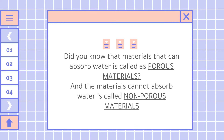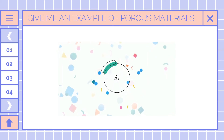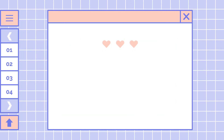Did you know that materials that can absorb water are called porous materials? And the materials that cannot absorb water are called non-porous materials. So now this is your time to shine. Can you please give me an example of porous materials — materials that absorb water — that you can see around your home? Okay, I know you got it. That's very good.